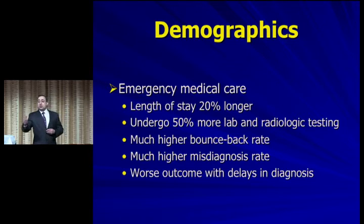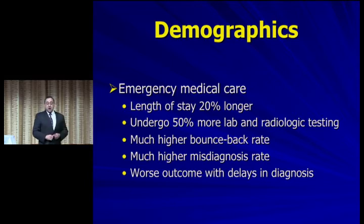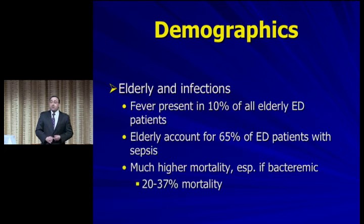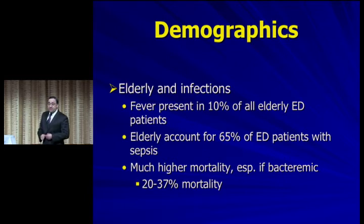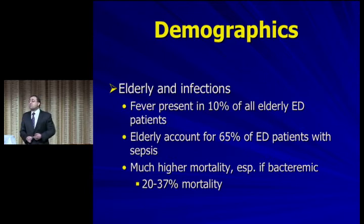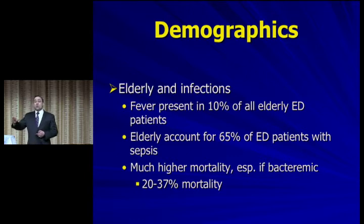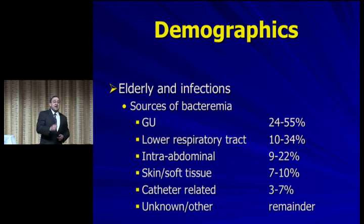When elderly patients get discharged, four times more often than young patients they'll come back for a second or third visit for the same problem. They have a much higher misdiagnosis rate, and because of their poor physiology when misdiagnosed, they have much higher mortality and morbidity. In terms of infectious diseases, fever accounts for about 10% of all presentations, and they account for about 65% of all cases of sepsis — with about a third of bacteremic elder patients dying during that hospitalization.